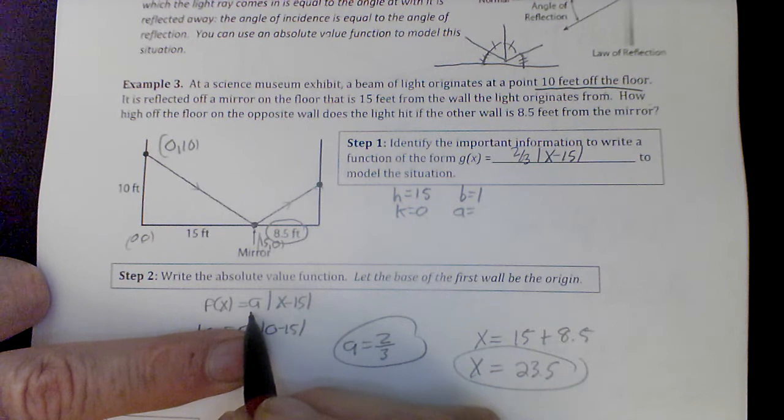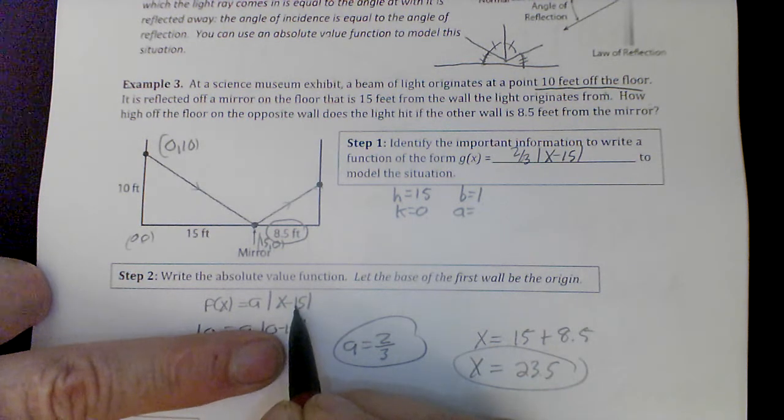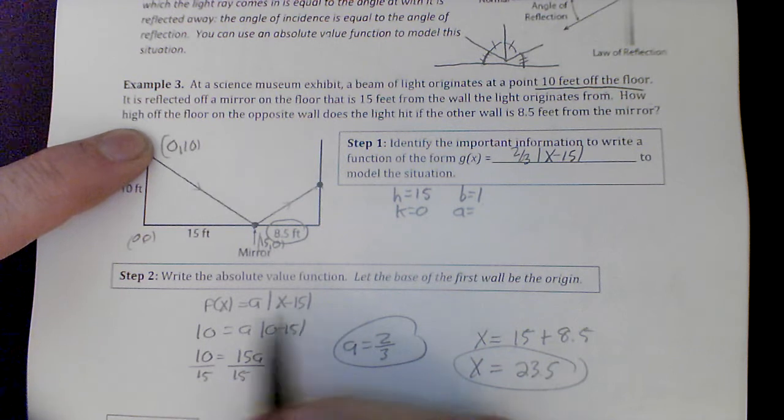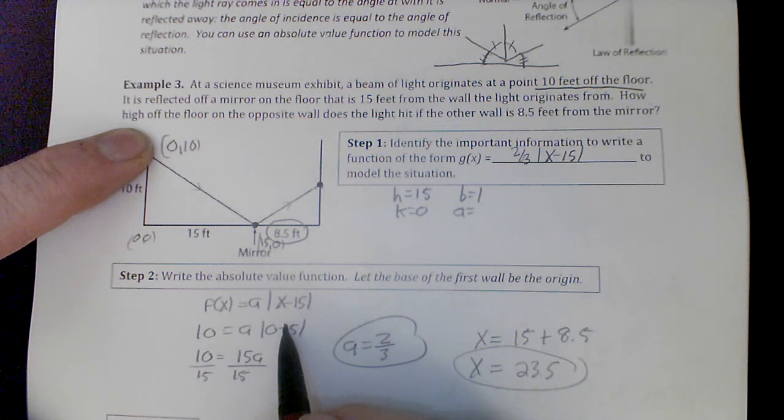f(x) equals a times |x - 15|. Then you just need a point. Well, we actually have a point right here. This point is (0, 10). So 10 being my output, 0 being my input.